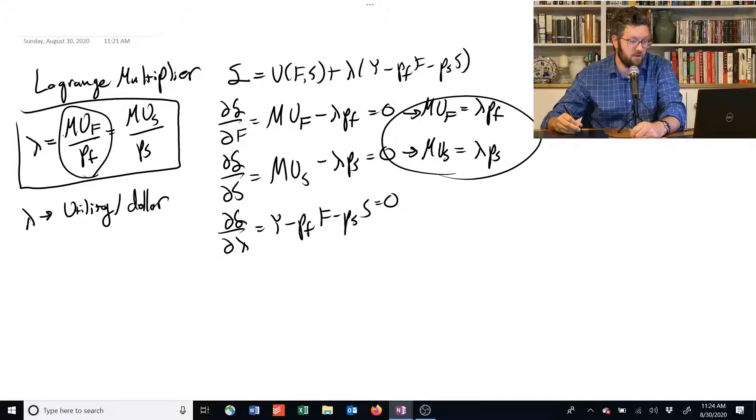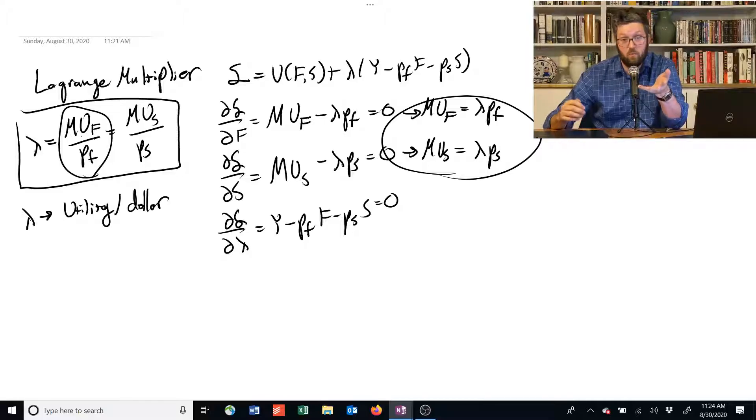One dollar divided by pf is how much extra food you get. And we multiply that by the marginal utility that that food, that one extra piece of food gets you. That's how it translates into utility.